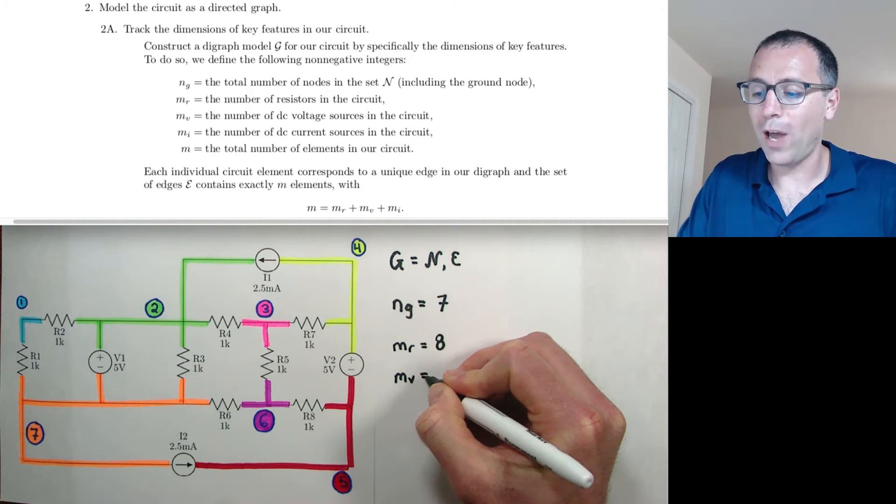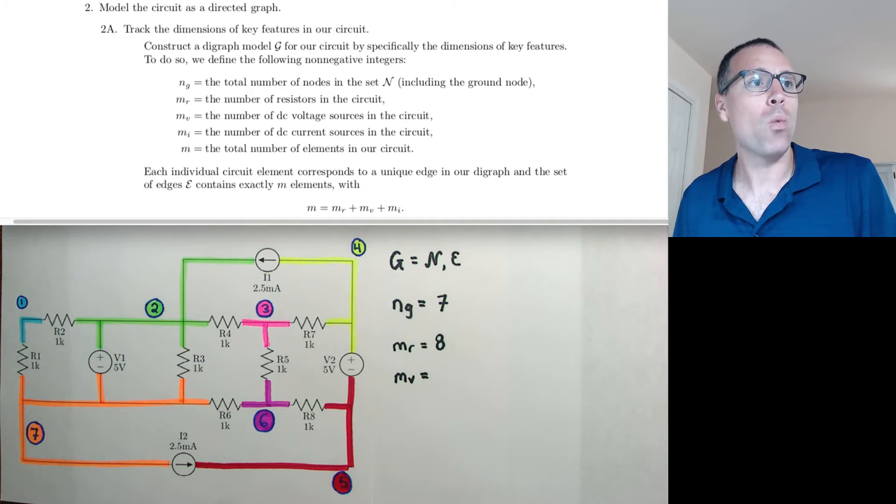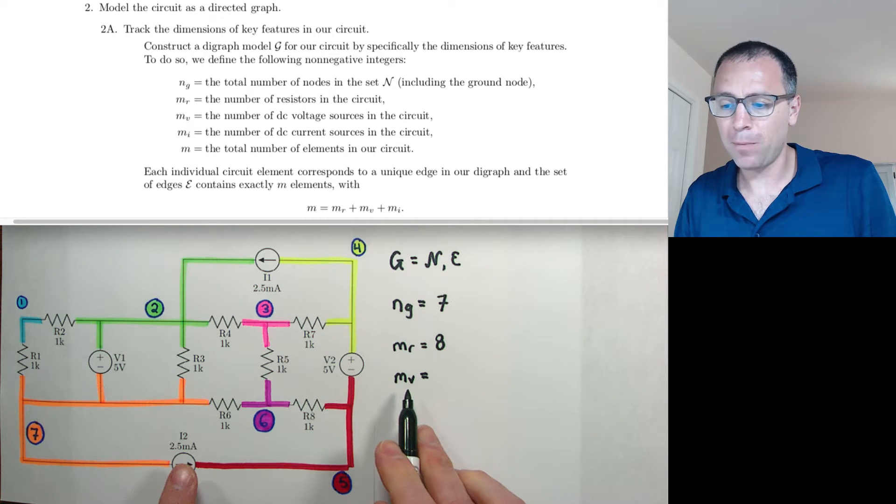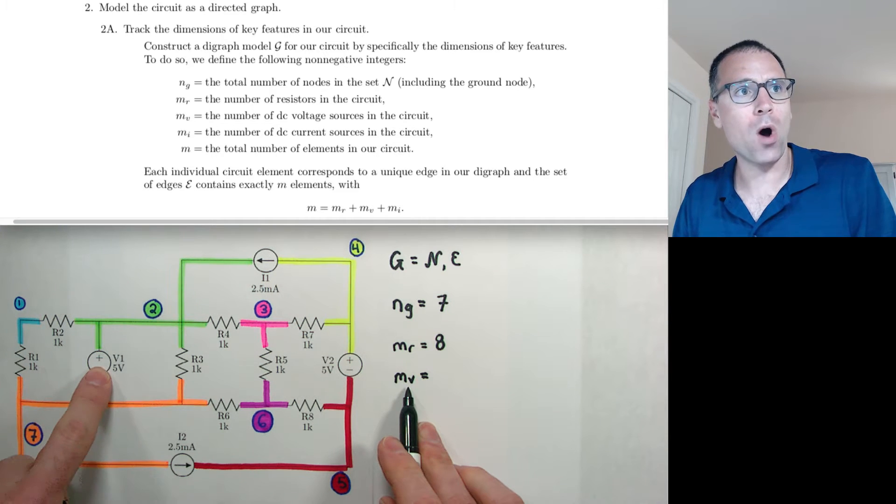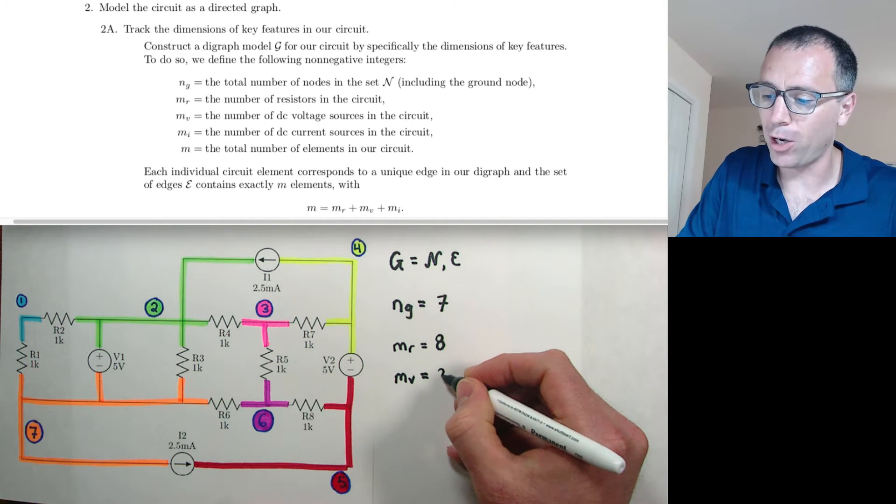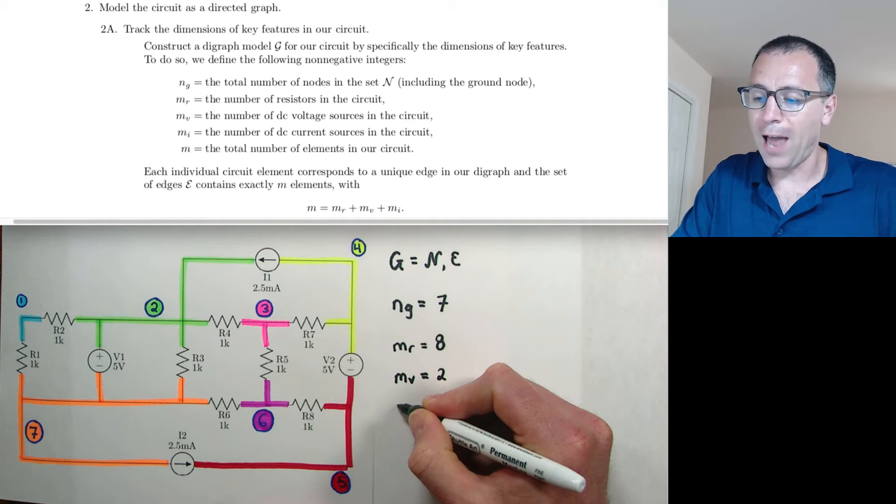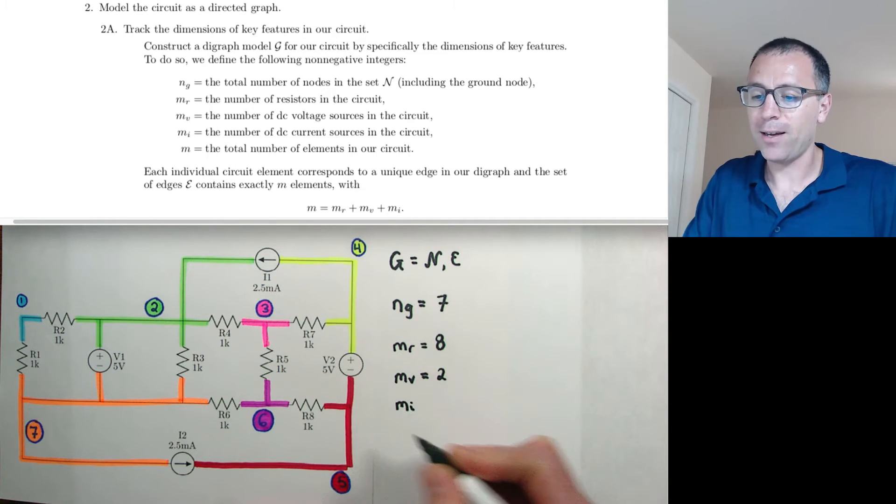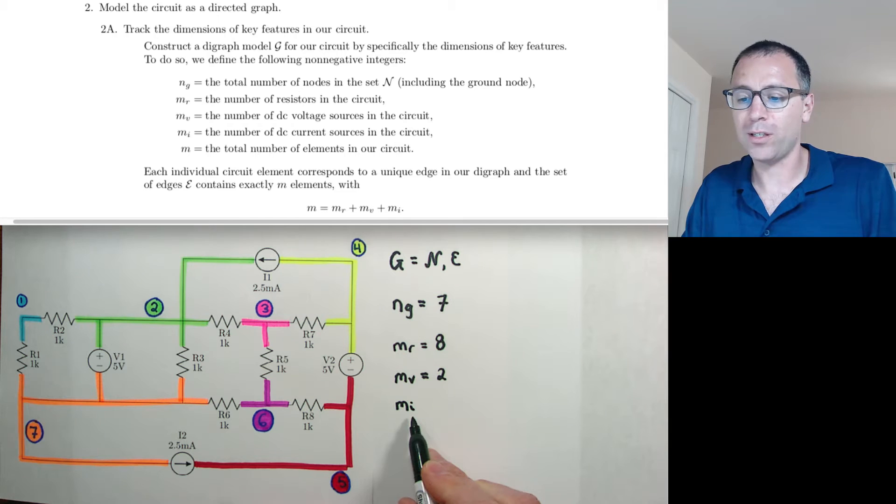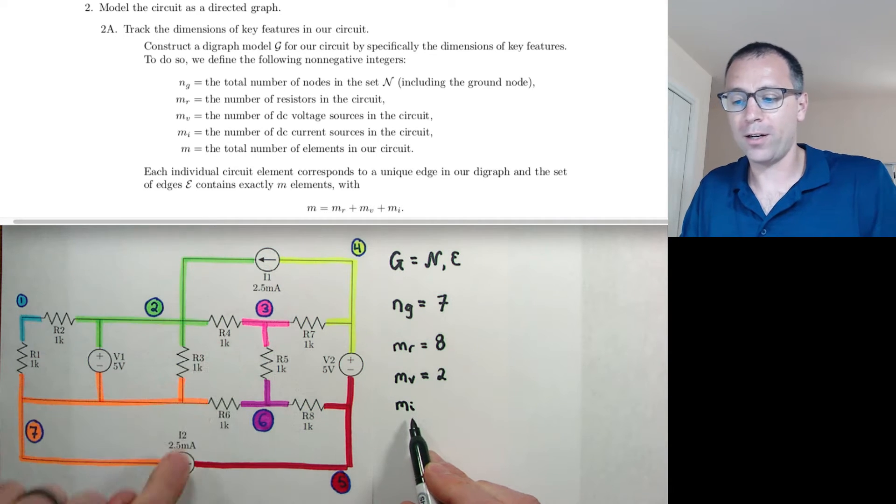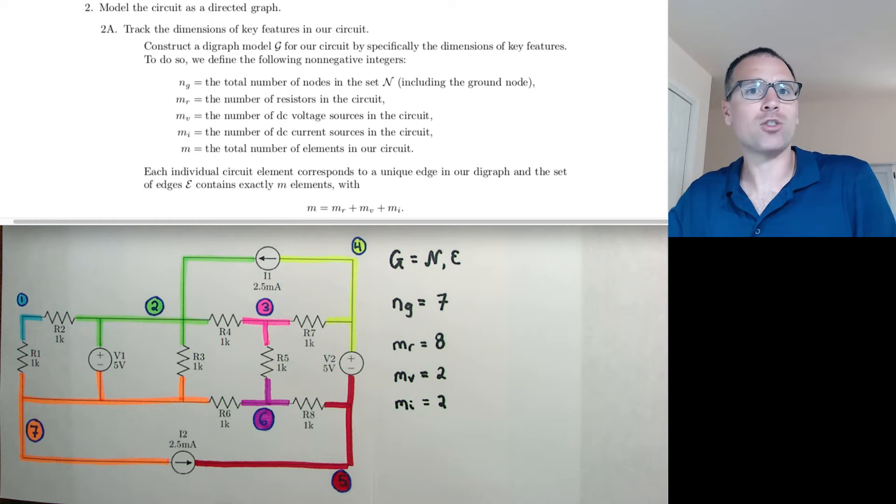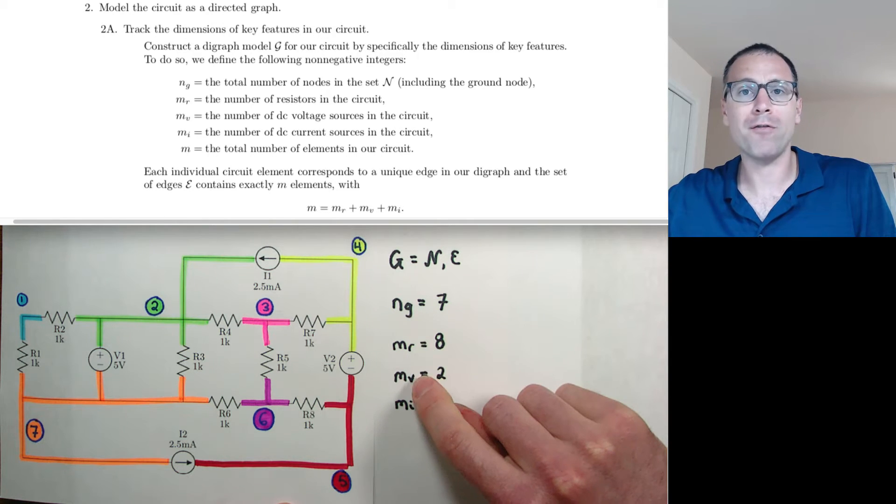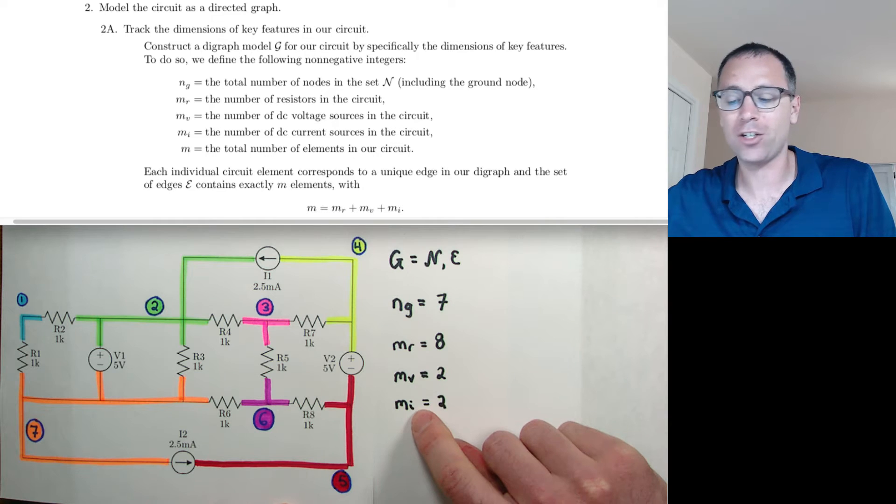So now we go down to M sub V. When I'm looking at M sub V, the number of voltage sources, I see that there are one, two voltage sources in the circuit, so I'm going to go ahead and call that two, and then M sub I is going to be the number of current sources. Here we see that there are one, two. The notation used here in any electrical engineering stuff, we'll see that R is resistors, V is voltage, and I is current.